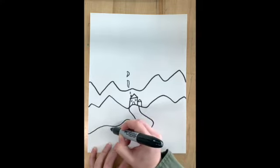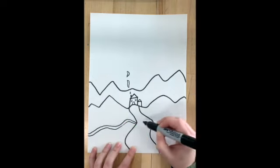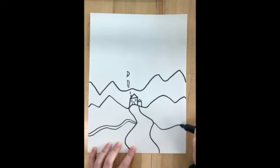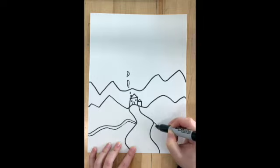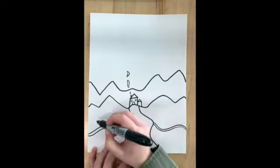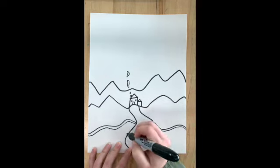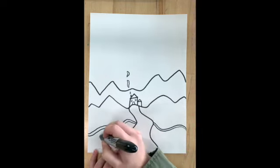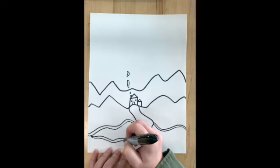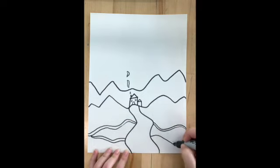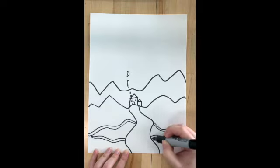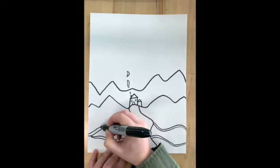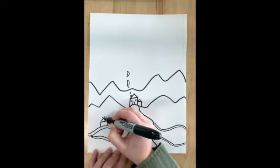I'm going to add more line details in my landscape. I like to add lots of lines because when I add my paint later they're really fun to color in. These lines could be like different pieces of flowers or grass, maybe rolling hills — they can kind of be anything you want them to be.